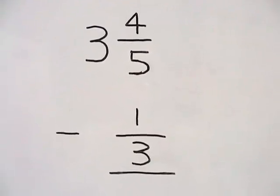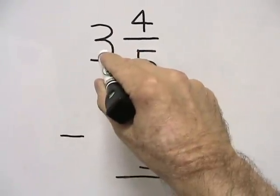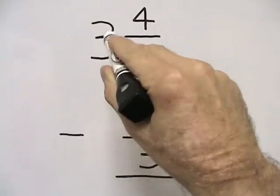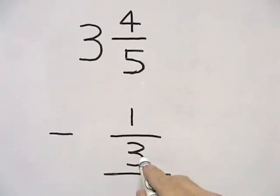For our first method, we're going to ignore our whole number for a few minutes and find the LCD, or least common denominator, for our two denominators.